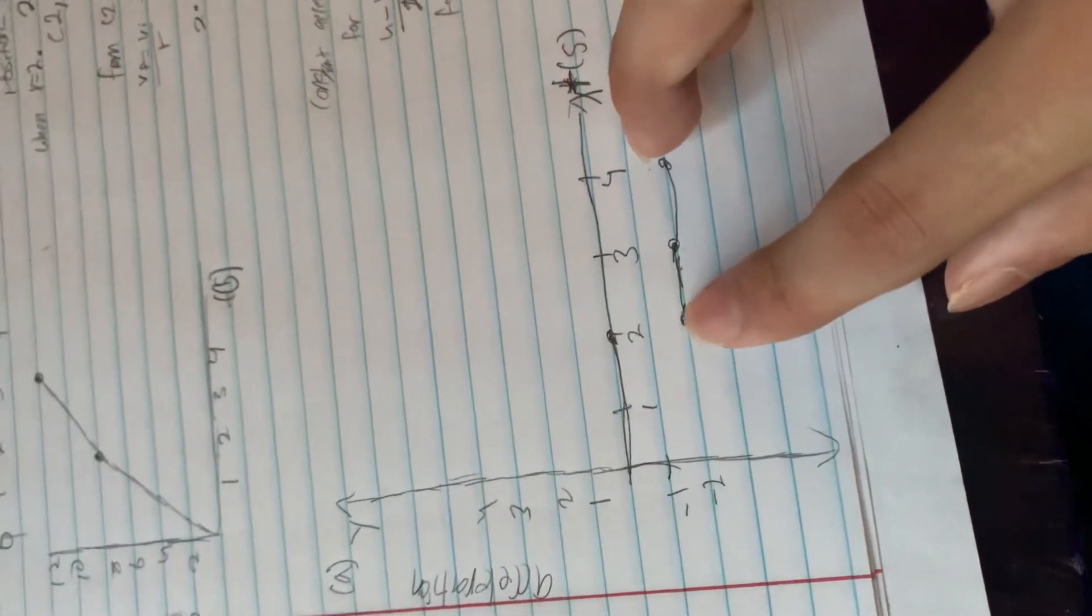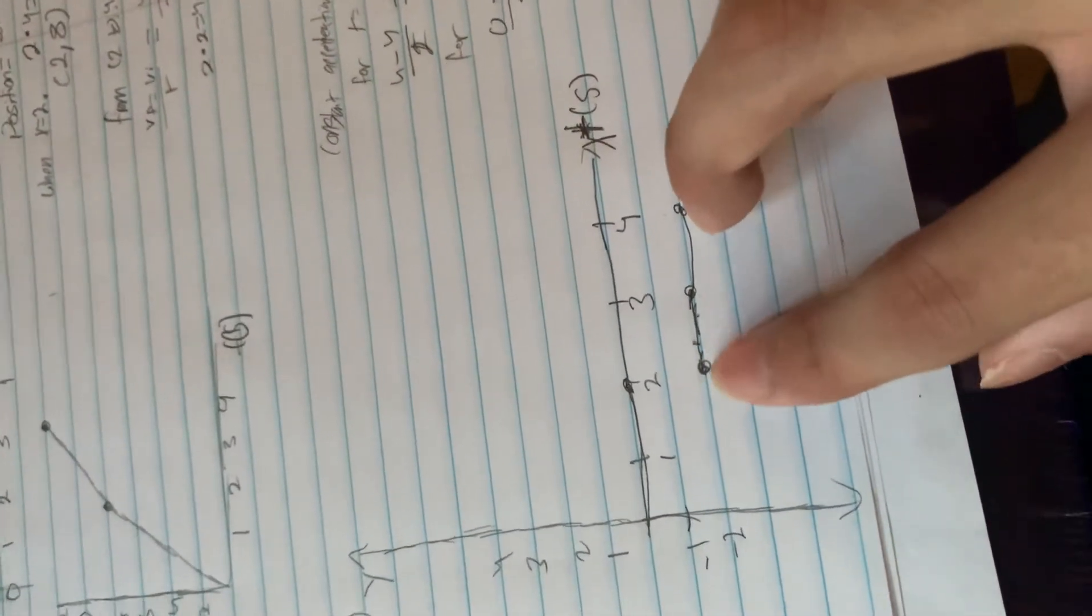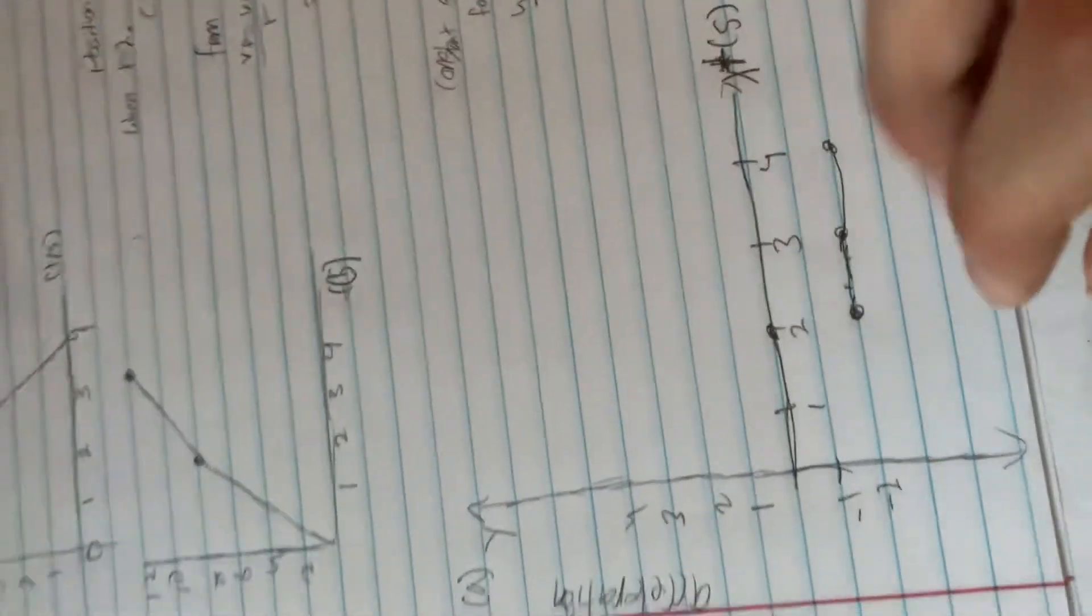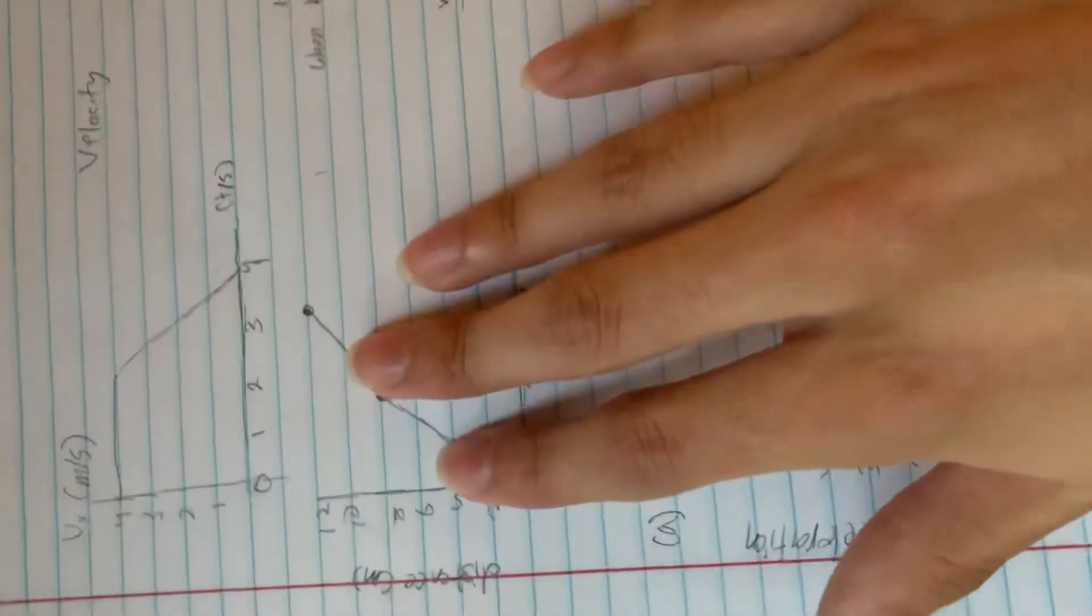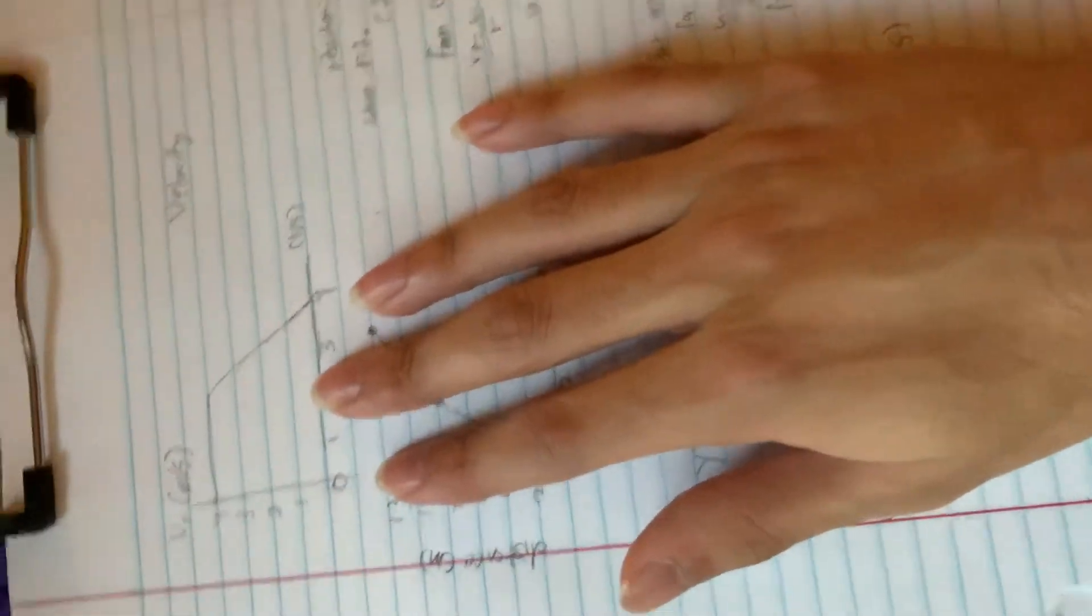So it would just be negative 2, from 2 to 4, it would be negative 2. So that would be the acceleration graph, this would be the distance graph, and this would be the velocity graph.